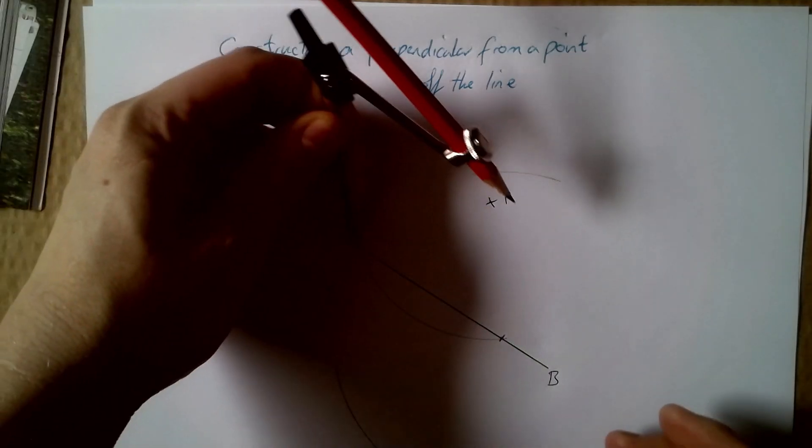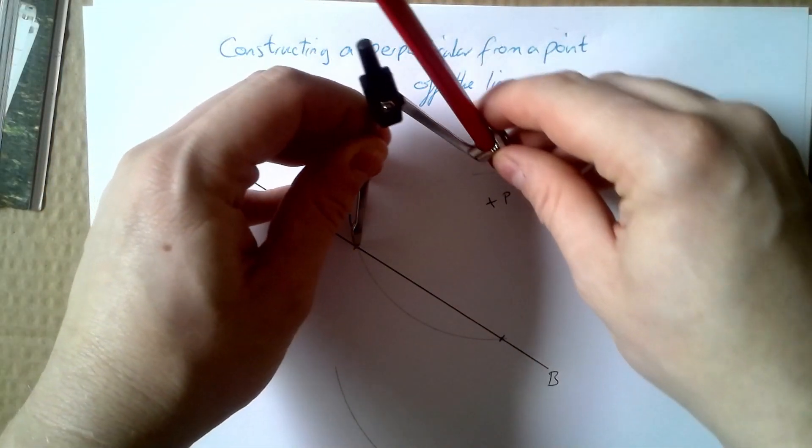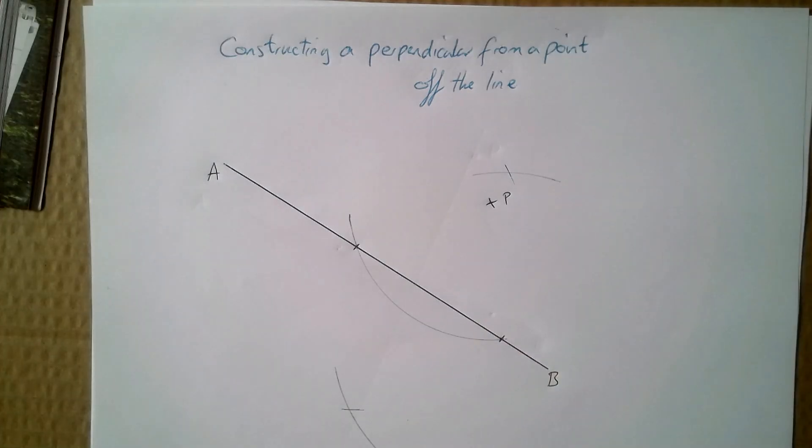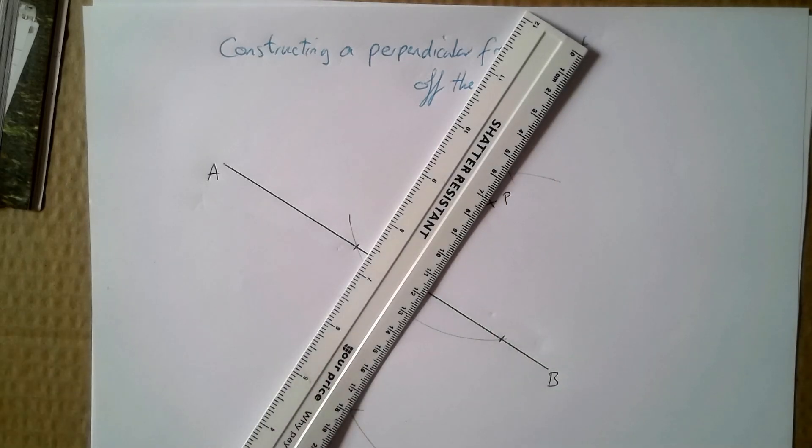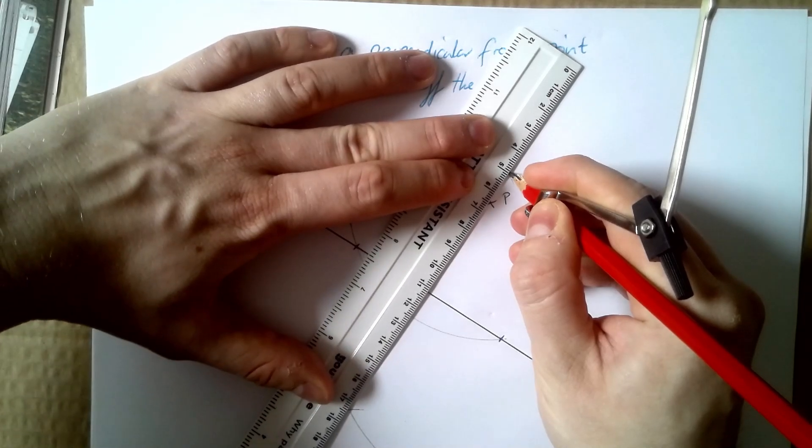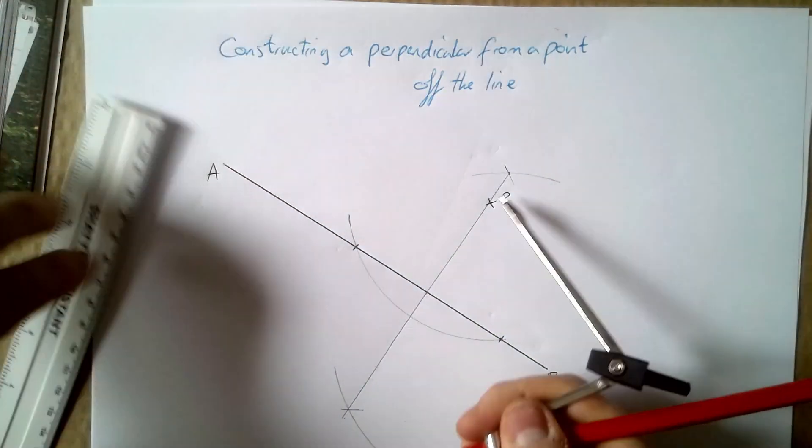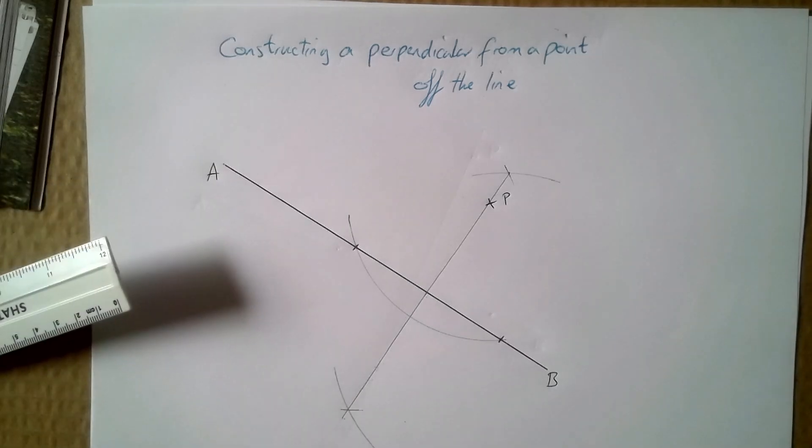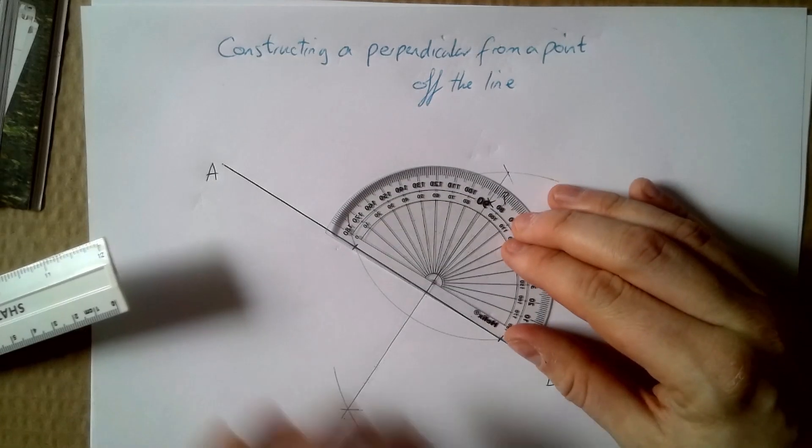Similarly on this side, arc above, arc below. If you want to do a full curve you can. Mine was quite big so I'd run out of space. Then get a ruler. Then connect up your two crosses and it goes straight through my point P and crosses AB at a right angle, meaning it is a perpendicular.